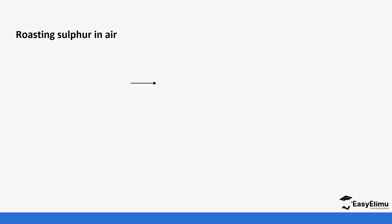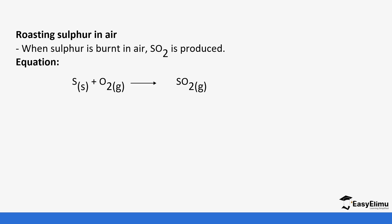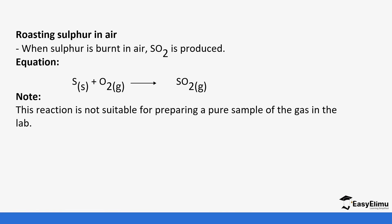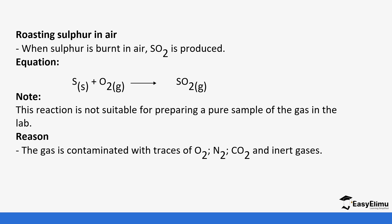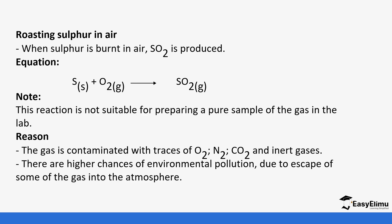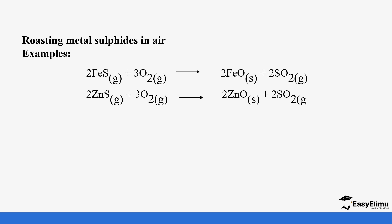Another method of producing sulfur dioxide is burning sulfur in air, which forms sulfur dioxide. However, this is not suitable for preparing a pure sample in the lab because air contains other components — nitrogen, carbon dioxide, and inert gases — that contaminate the product, and it also causes environmental pollution. Method four is the reaction of metal sulfides in air: if you burn those metal sulfides, you form their corresponding sulfur oxides.